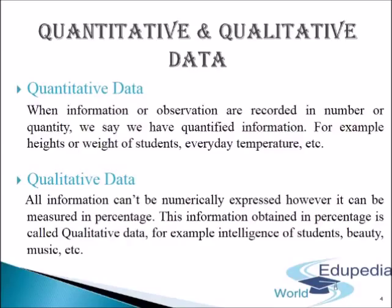So, what is quantitative data? When information or observations are recorded in numbers or quantity, we say we have quantified information. For example: the number of people in a state who are strict vegetarians, height or weight of students, everyday temperature, income of individuals, prices of wheat during a given week, number of people who are poor, rich, or middle class, number of people who are illiterate and will not get jobs, number of highly educated people who will have the best job opportunities, etc. These are known as quantitative data.